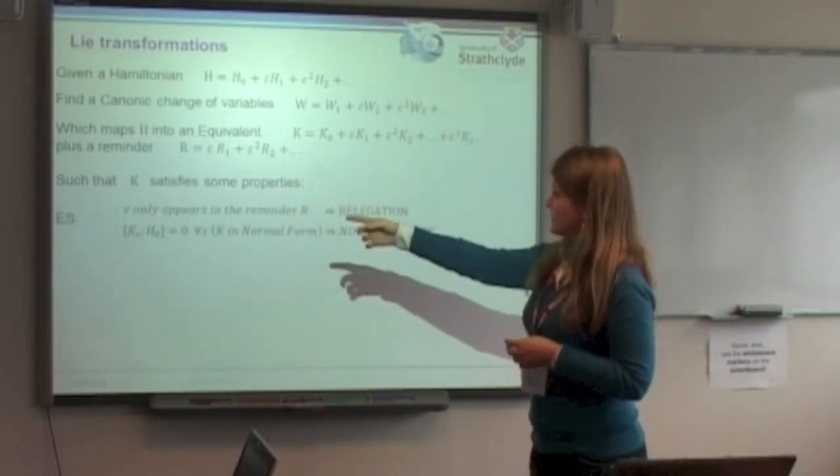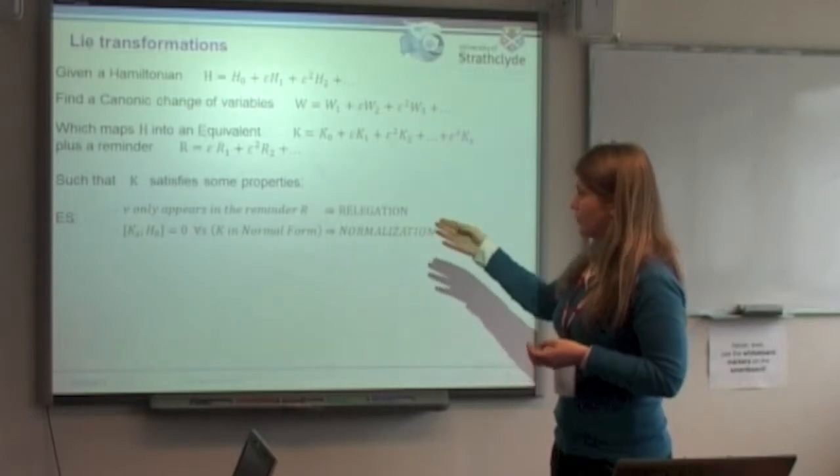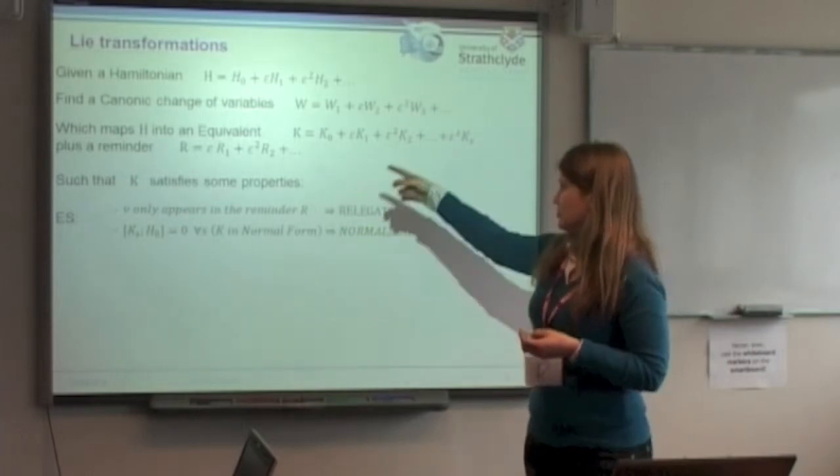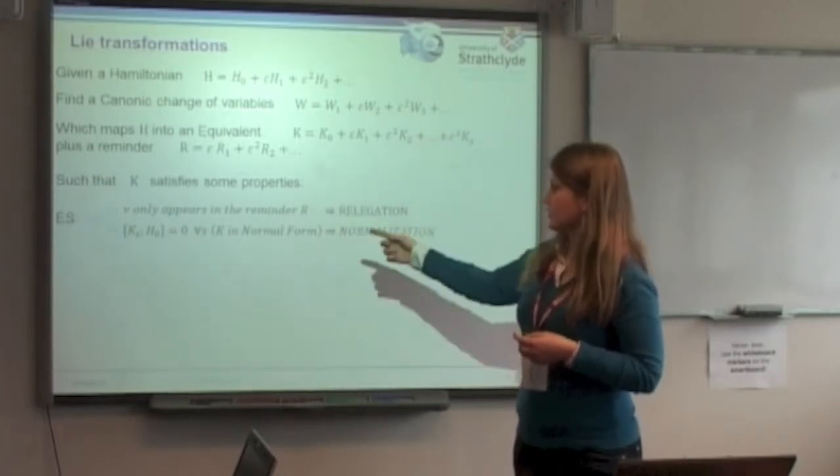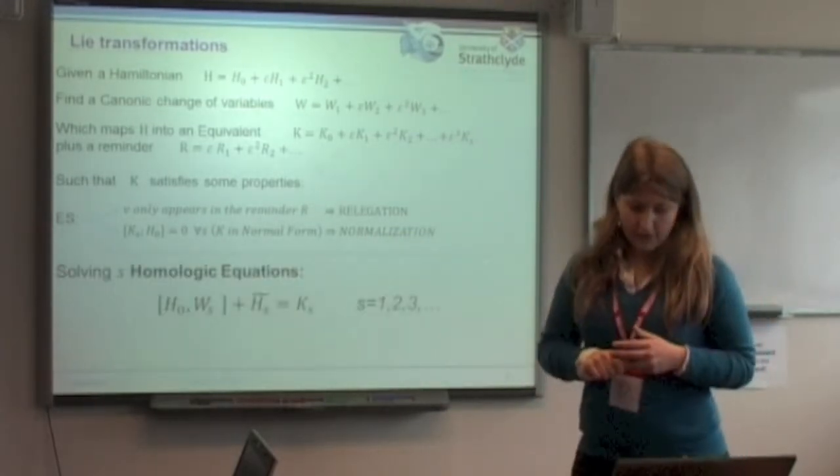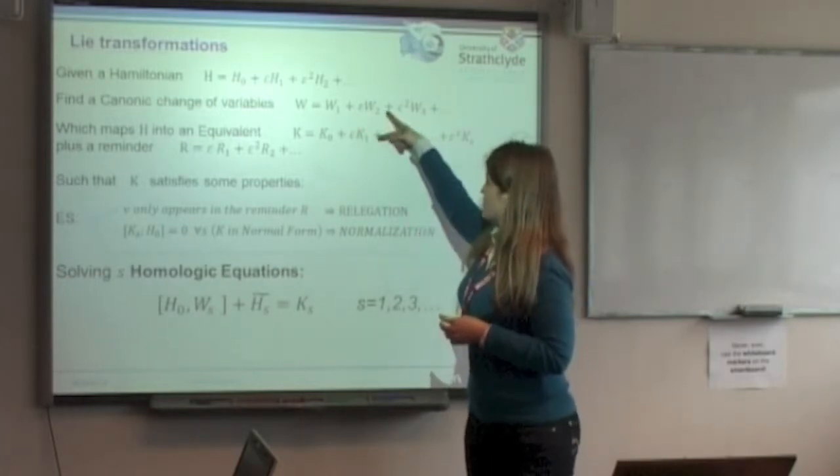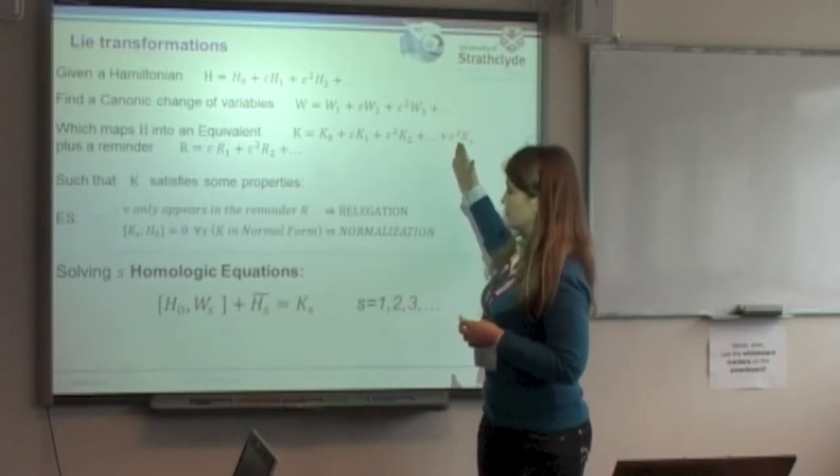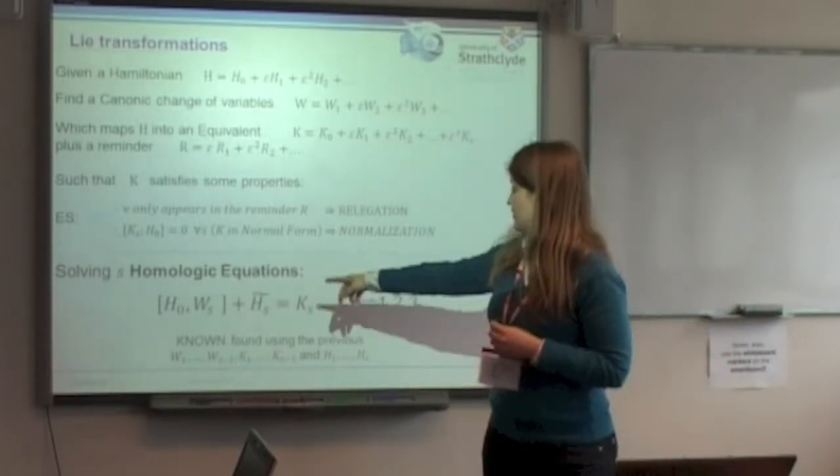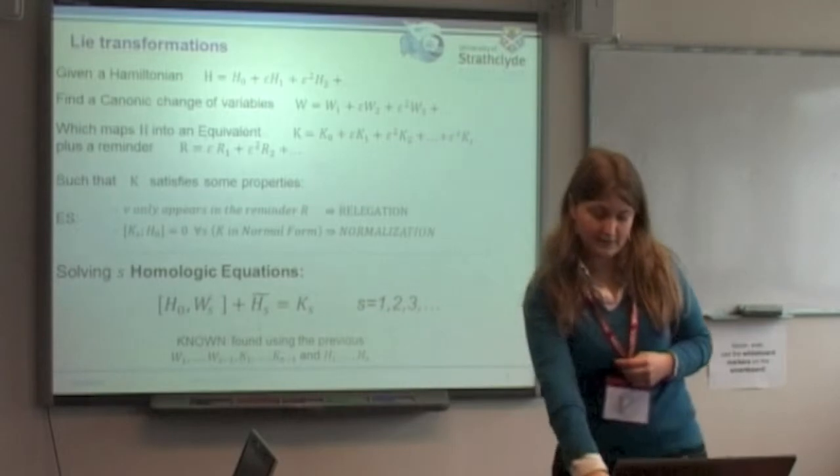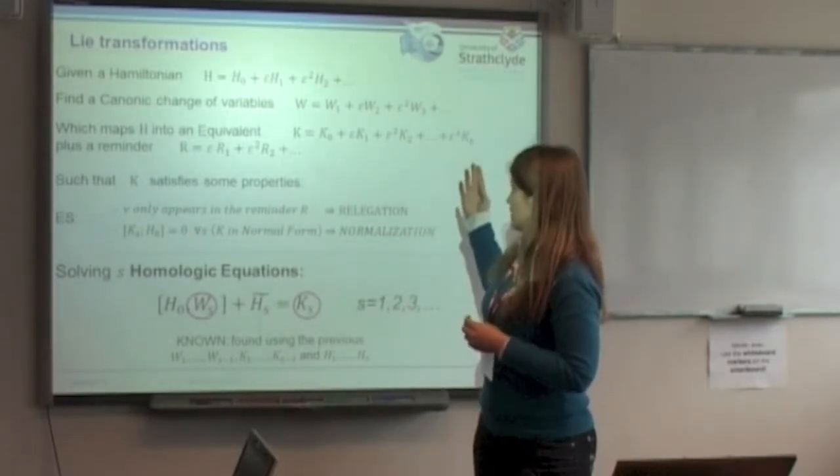The difference between relegation and normalization is, for example, that in the relegation the property that we impose is that the argument of node will only appear in the remainder, while in the normalization, what we want is that the new Hamiltonian is in normal form, whose definition is that the Poisson bracket with the integrable part of the starting Hamiltonian is always zero. This is done by solving, all the transformation and the new Hamiltonian are found step by step. So we have to decide at which step we want to truncate the process. Every step is found by a homological equation in which this term here can be evaluated from the previous steps, and we find the new term of the new Hamiltonian and the term of the corresponding canonic change of variables.